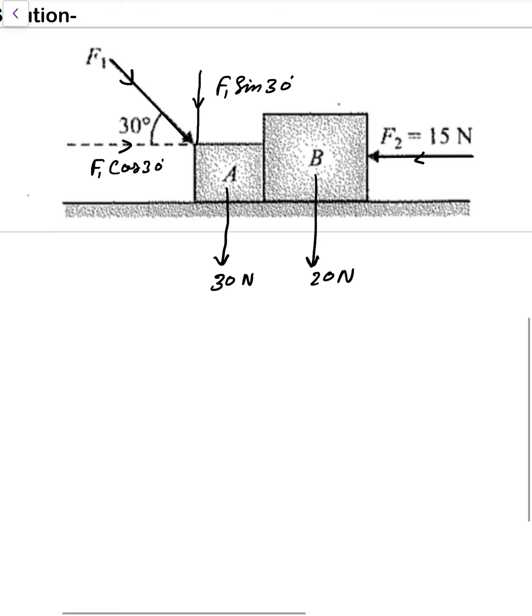Now if you see very carefully, make free body diagram for block A. That one is 30 Newton, F1 cos 30, normal force N1, and in this direction F1 sin 30.